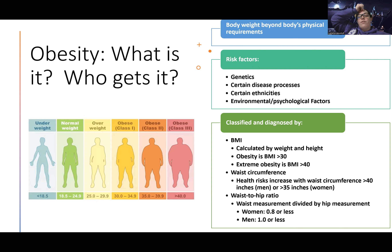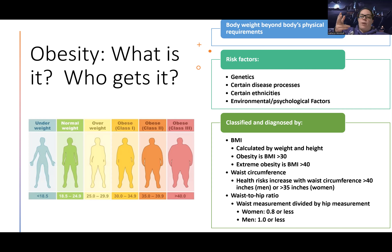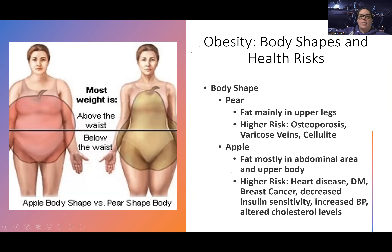We can also look at waist circumference: greater than 40 inches for men and greater than 35 inches for women is considered to increase health risks. And then there's the waist-to-hip ratio — for women, a ratio of 0.8 or less is considered higher risk, and for men it's 1.0 or less — higher risk for health problems.